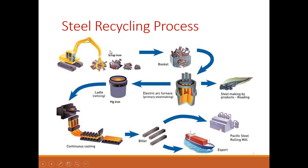Looking at the steel recycling process: scrap iron is collected and stored, then melted down in the furnace to make pig iron. The molten iron is then made into billets, which are transported to other customers who use them as raw materials to make other products. That is what the steel recycling process looks like.